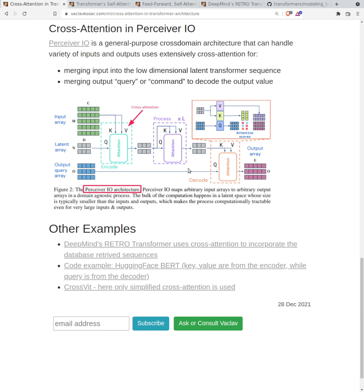Perceiver IO seems to be a very general architecture - maybe it could be usable on your project to merge different modalities. If you have different modalities, think about doing something like cross attention in Perceiver IO.